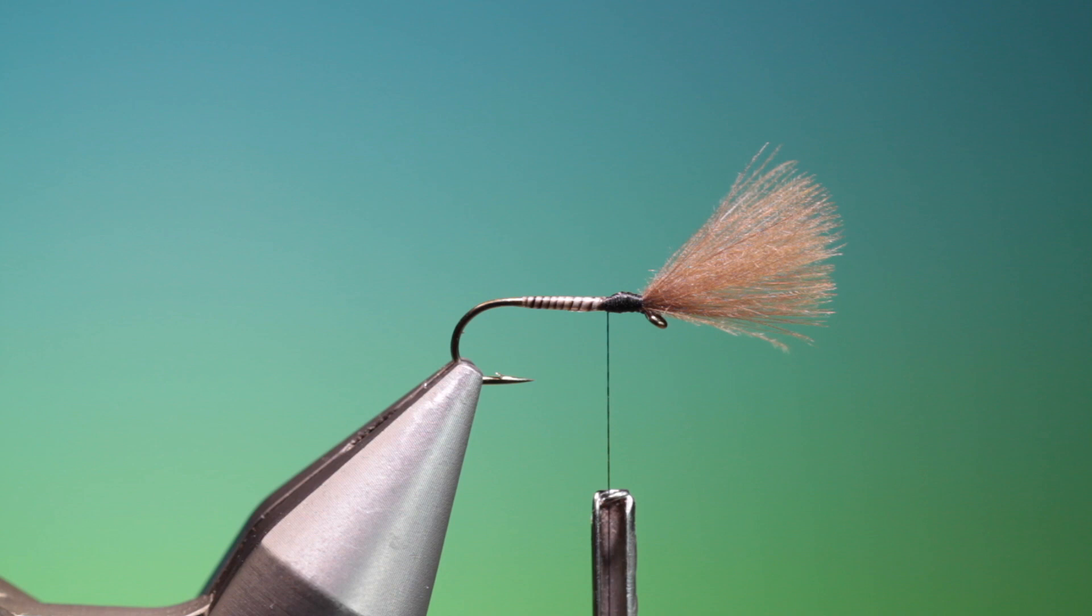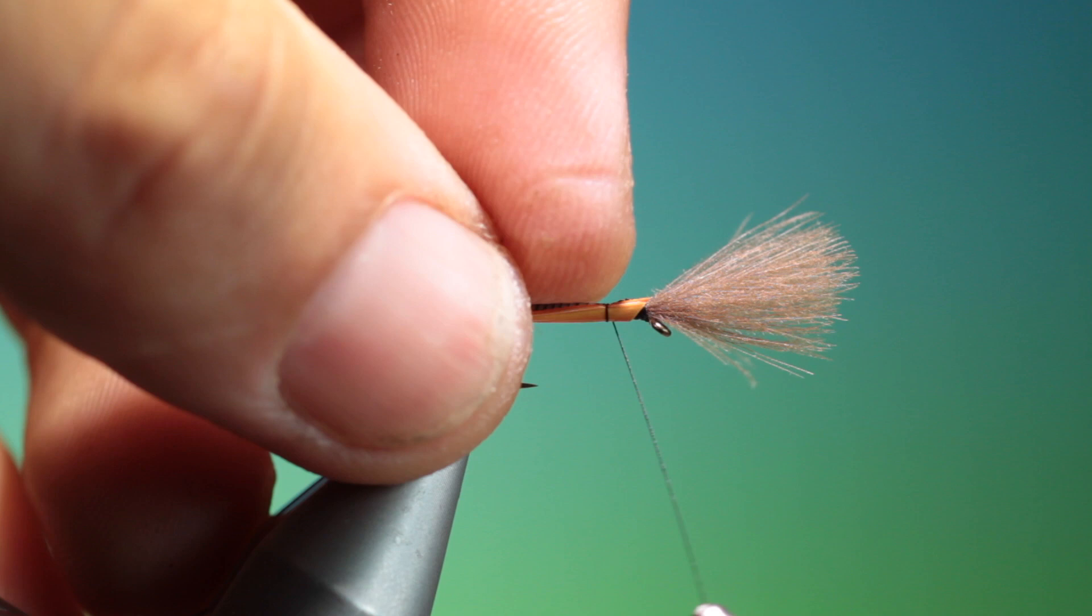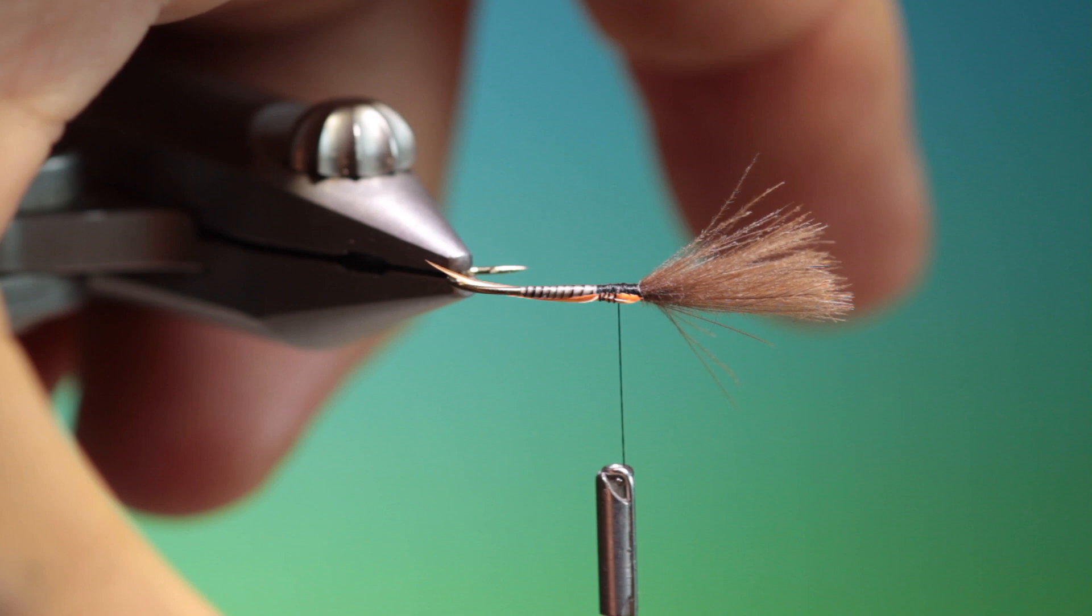And what we need is two orange goose biots for the wing buds. And just tie one in there and do the other on the other side.